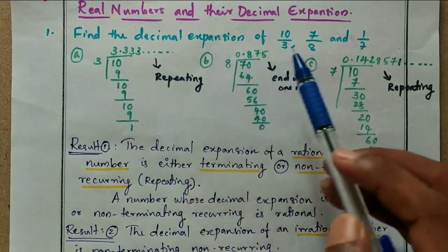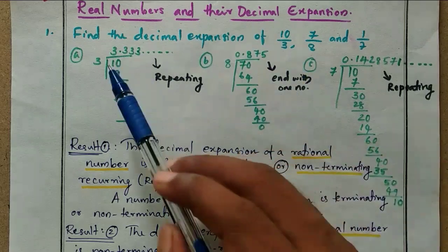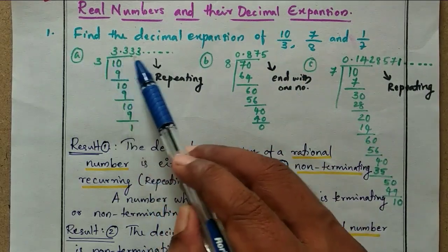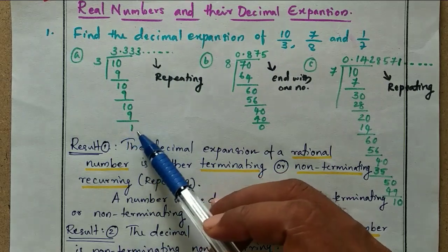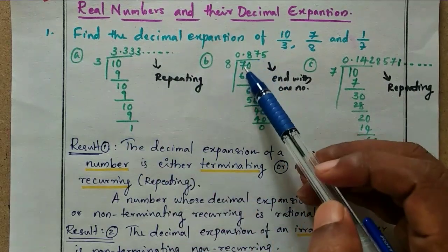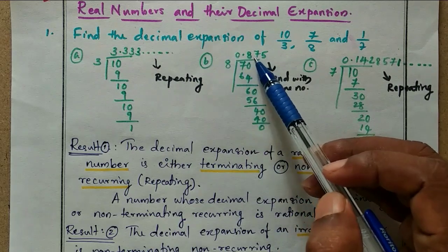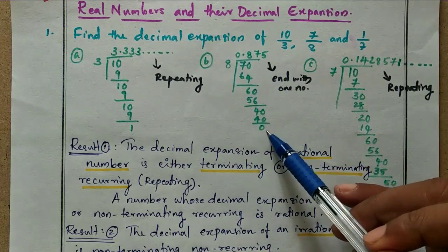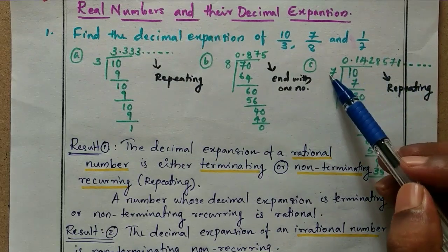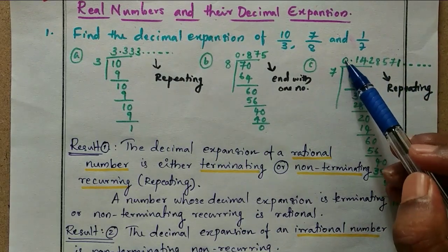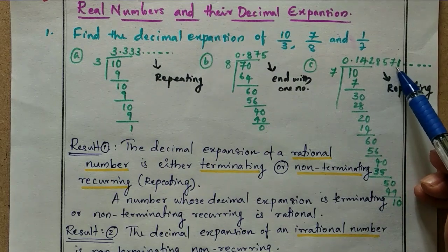You already know how to divide a number by another number. 10 divided by 3 gives quotient 3.333... and the remainder becomes 1 again. 7 divided by 8 gives quotient 0.875 and the remainder becomes 0. And the third one, 1 divided by 7, gives 0.1428571...